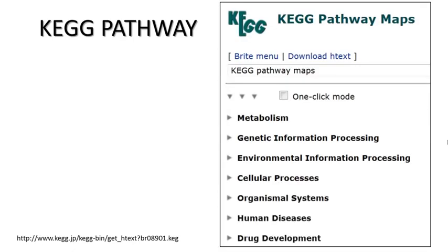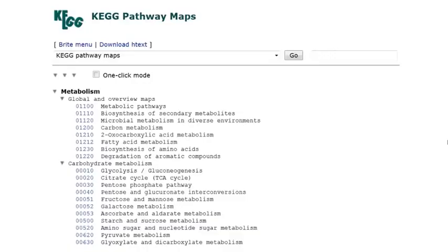KEGG pathways are divided into seven categories, including metabolism, genetic information processing, environmental information processing, cellular processes, organismal systems, human diseases, and drug development. Some of these categories were relatively new and not yet comprehensive, such as human diseases. But categories like metabolism are extremely useful.